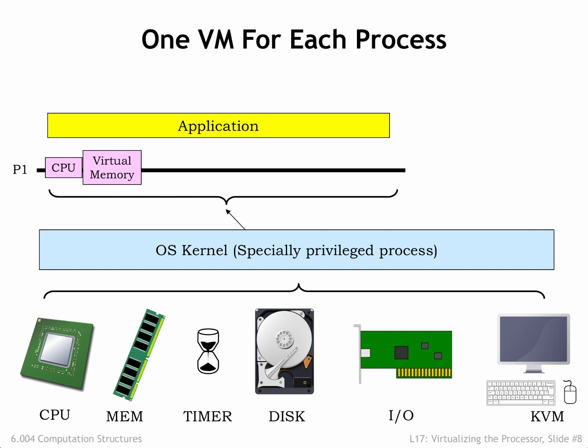User mode programs run directly on the physical processor, but their execution can be interrupted by the timer, giving the OS the opportunity to save away the current process state and move to running the next process. Via the MMU, the OS provides each process with an independent virtual address space that is isolated from the actions of other processes. The virtual peripherals provided by the OS isolate the process from all the details of sharing resources with other processes.